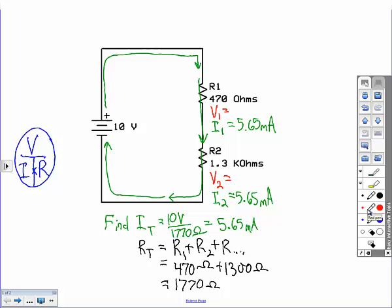Now the voltage drops across resistor one and two are going to be different because some of the voltage is used up pushing current through the first resistor, and the rest of the voltage is used up pushing the current through the second resistor.